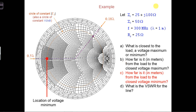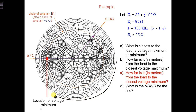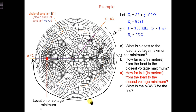The voltage minimum will occur a quarter of a wavelength later — that's the distance from here to here, because this was 0.25 lambda. Since this is 0.07 lambda, and over here we're going to get 0.25 lambda, we can add those two together and we get 0.32 lambda, which is 32 centimeters, since we know lambda is 1 meter.